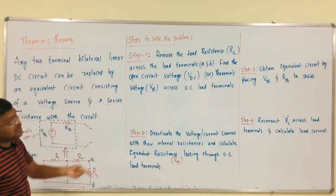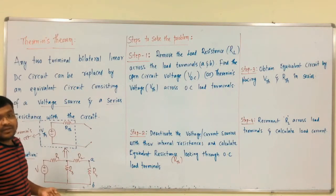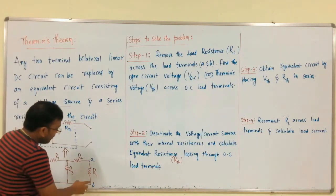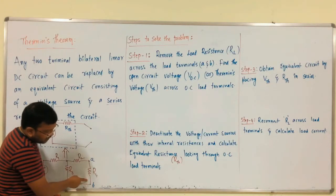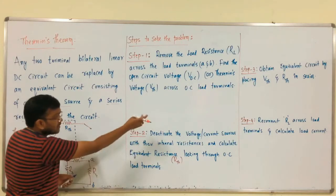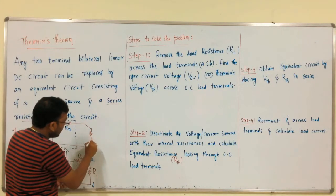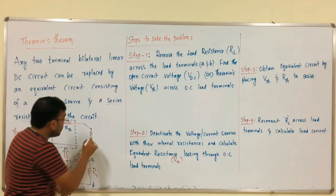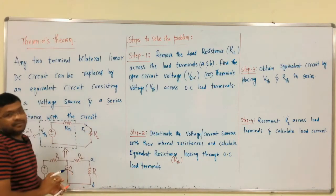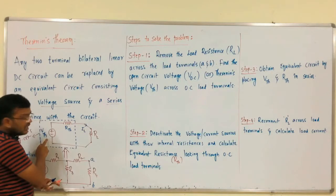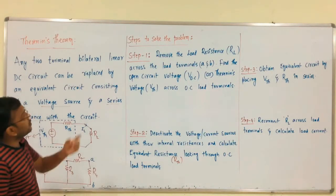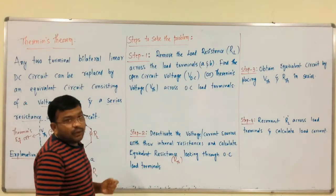We have to discuss the step-wise procedure to solve the problem. This is the Thevenin's equivalent circuit. For example, the examiner wants to know the value of current through a particular branch — for us this is load resistance. In step 4, we have to connect that resistance, which we call load resistance, and calculate the current through this load. The voltage source in series with R_TH is nothing but the Thevenin's equivalent circuit. Now we have to discuss the step-wise procedure to calculate.